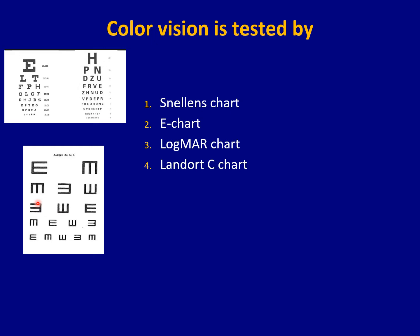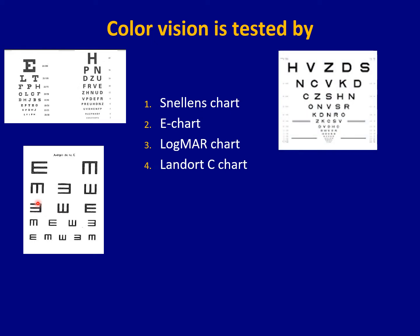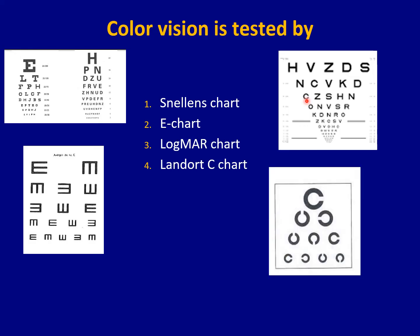That's how you check visual acuity using the E-chart. Sometimes you can use a more detailed chart, normally used for research, called the LogMAR chart. Another chart used is the C-chart. You show the circle to the patient and ask which side is broken — right, up, left, or down. These are the different ways of checking visual acuity.